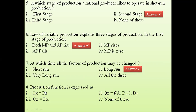Question 8: the production function is expressed as — the answer is Qx (output quantity) equals a function of A, B, C, D, where A, B, C, D are the factors of production. So output is a function of all the factors, or all the inputs used for production. This is your production function expression.